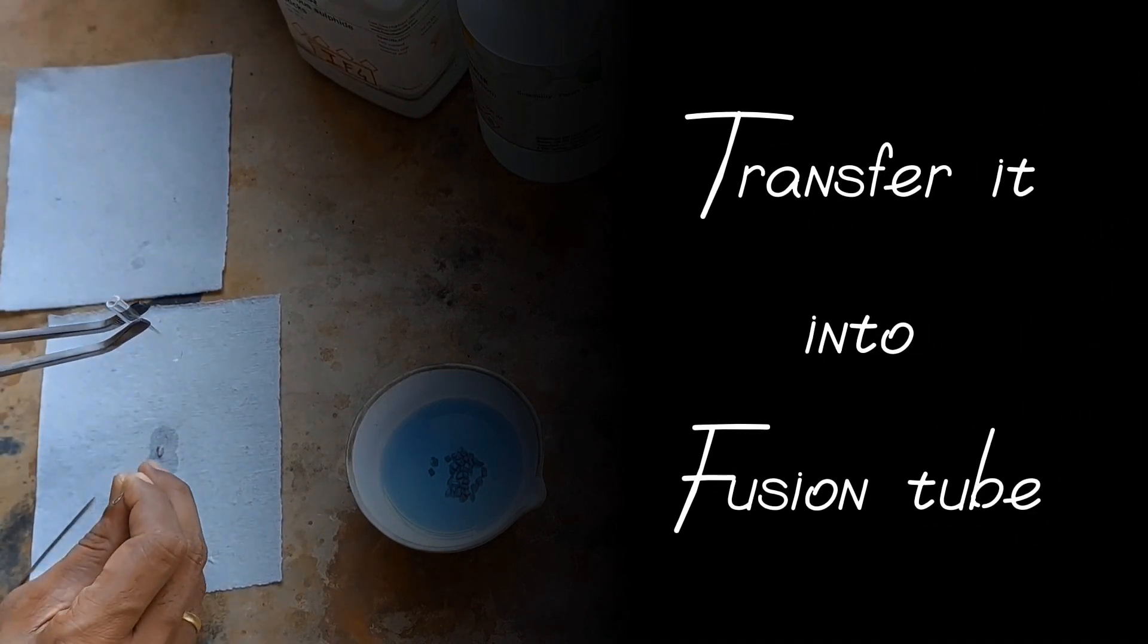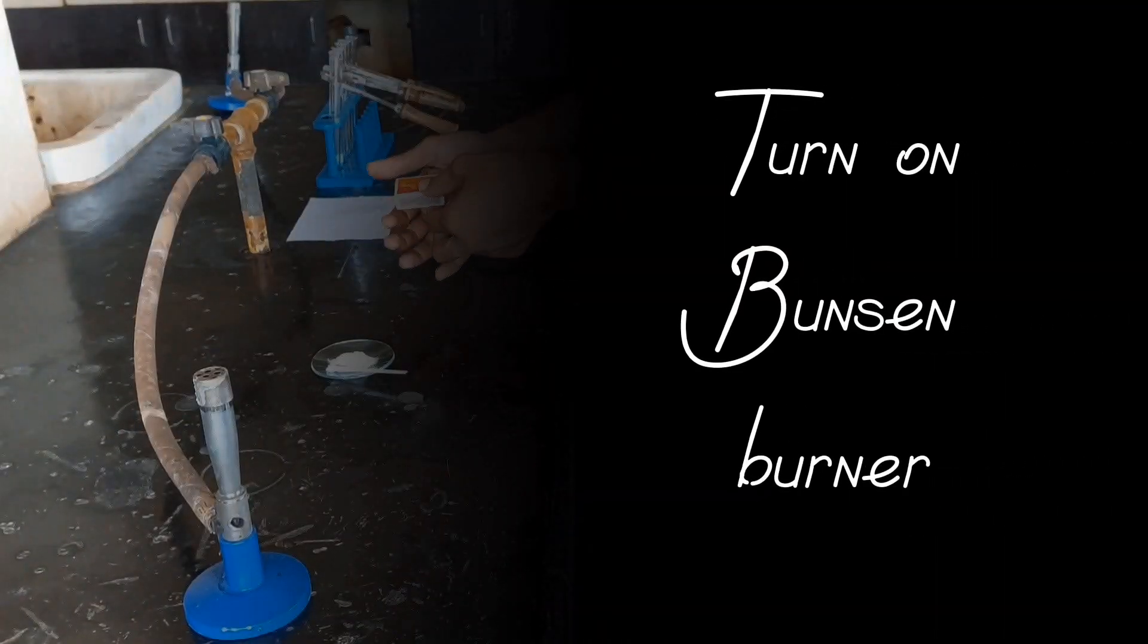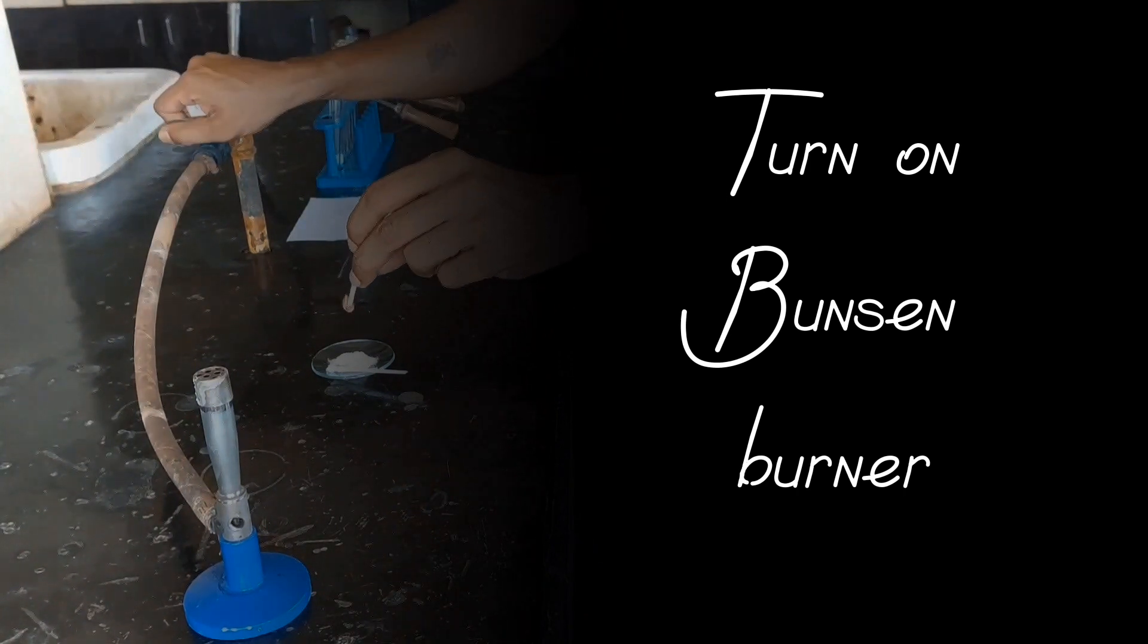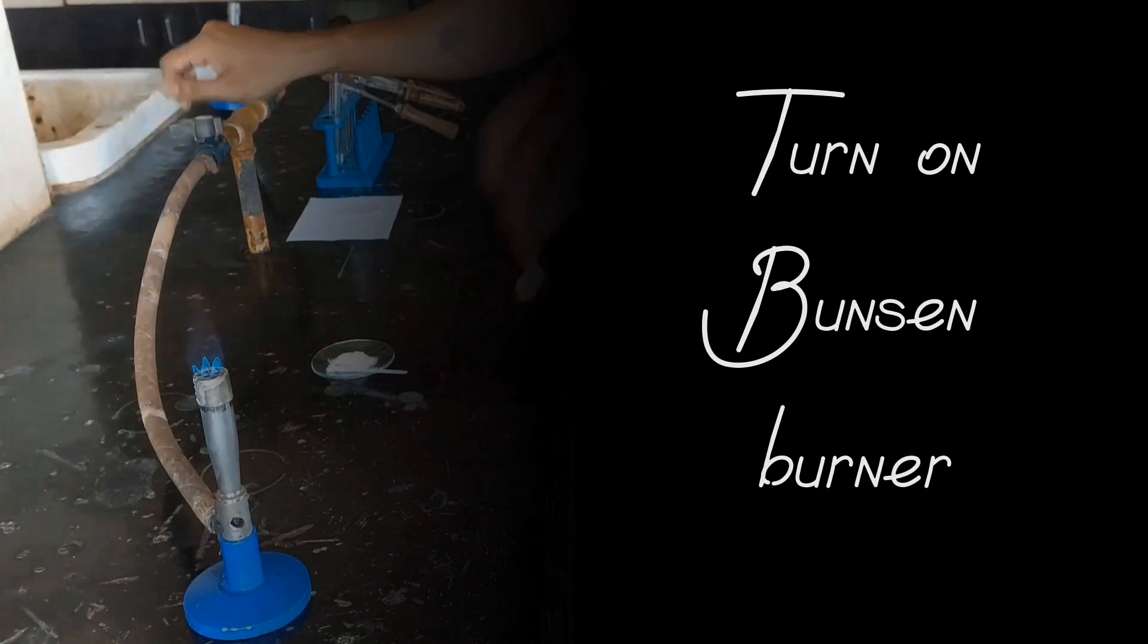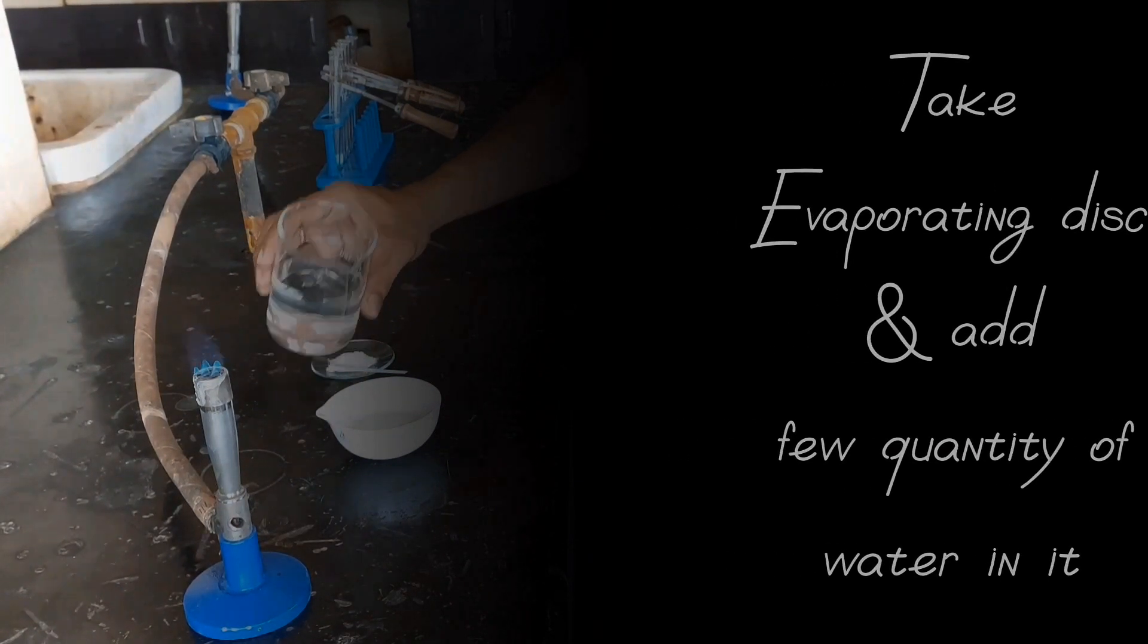Transfer it into fusion tube. Turn on Bunsen burner. Take evaporating disc and add few quantity of water in it.